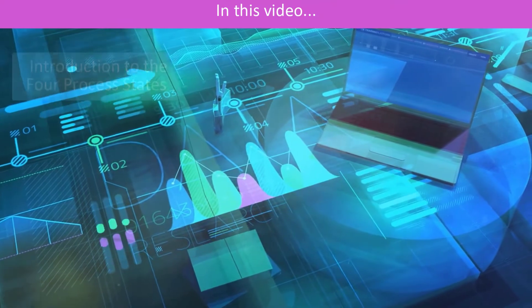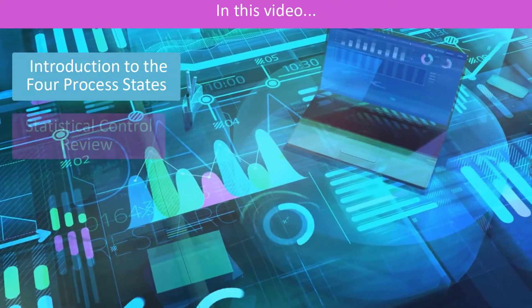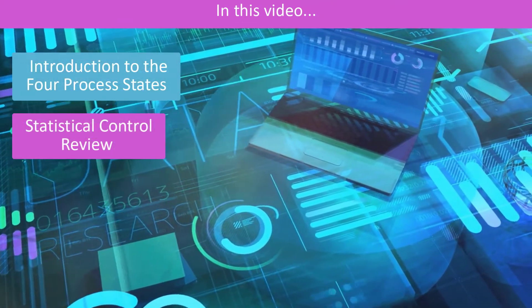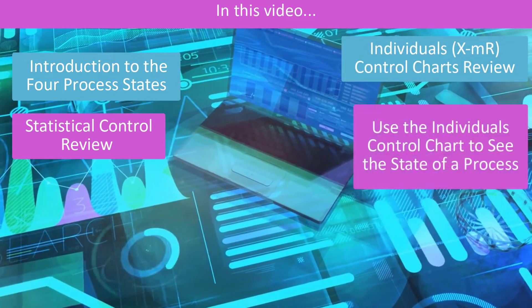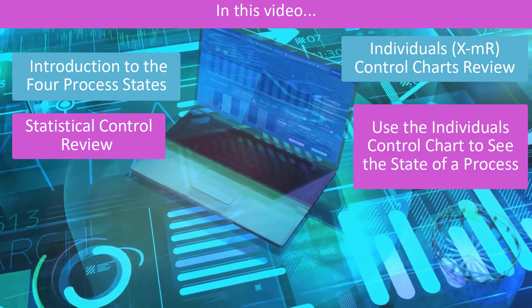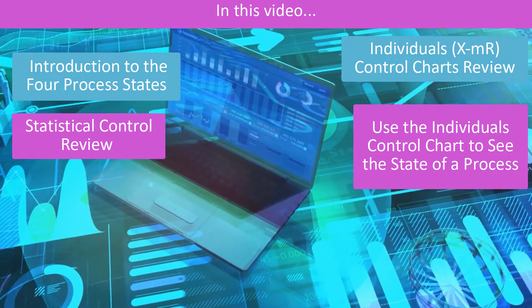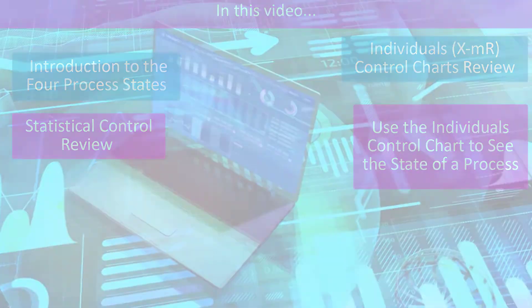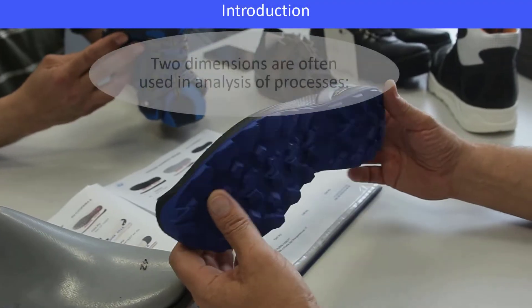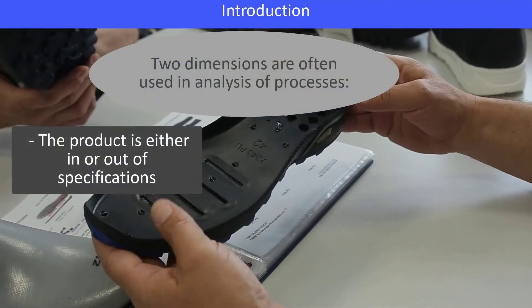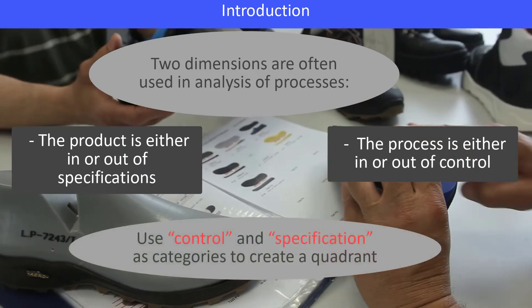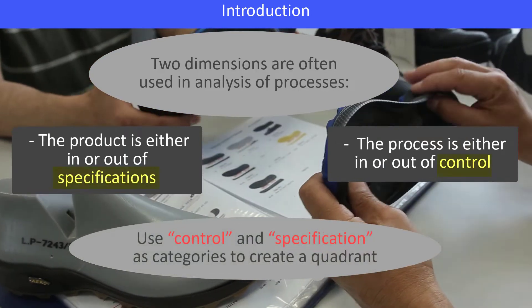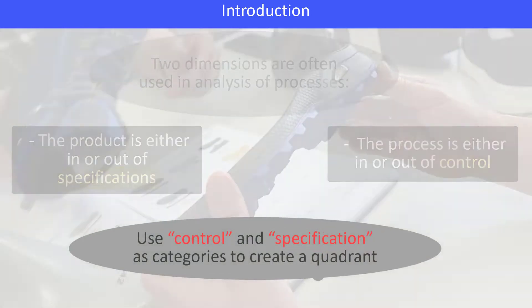In this video, we're going to start with introducing the four process states that were developed by Dr. Donald Weider, who reviews statistical control and individual charts, which we'll be using to help see the state of the process. So there are four possibilities. When you take a look at your processes, we usually think about two dimensions: product in spec or out of spec, and the process is either in control or out of control. We're going to use control and specification as categories to create a quadrant.